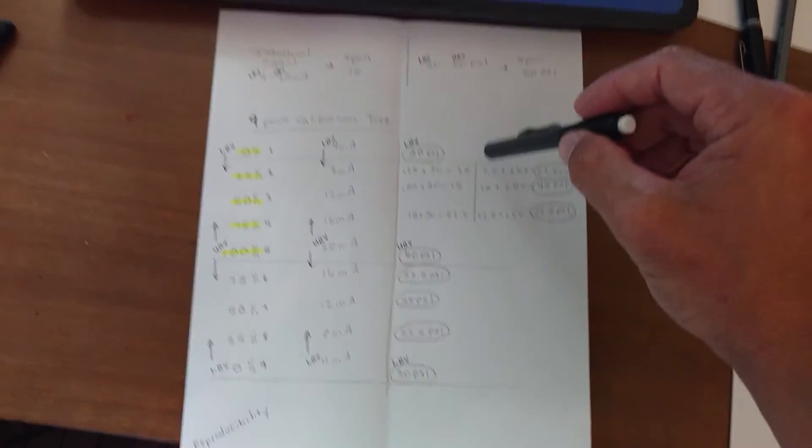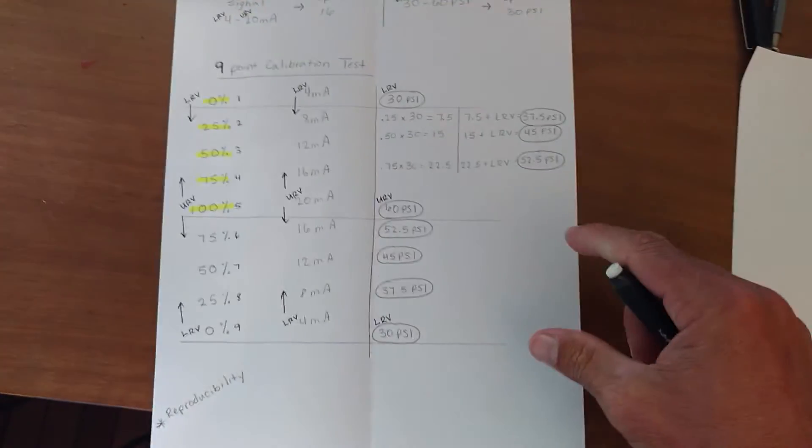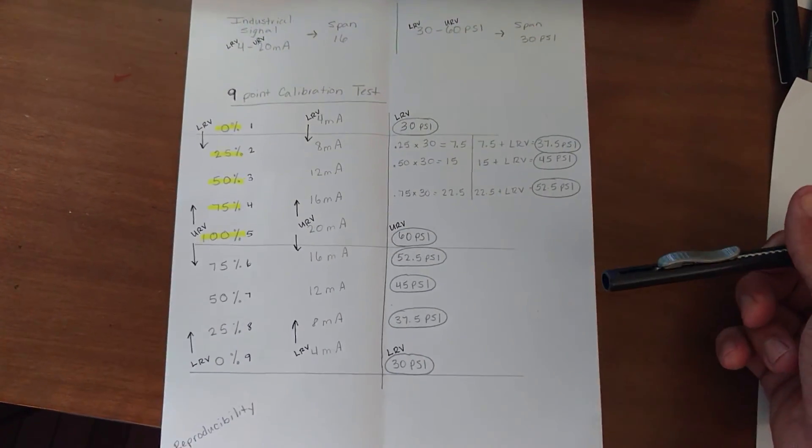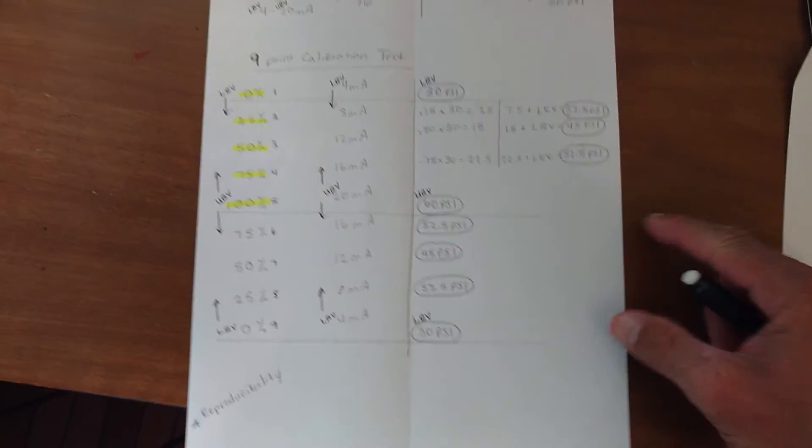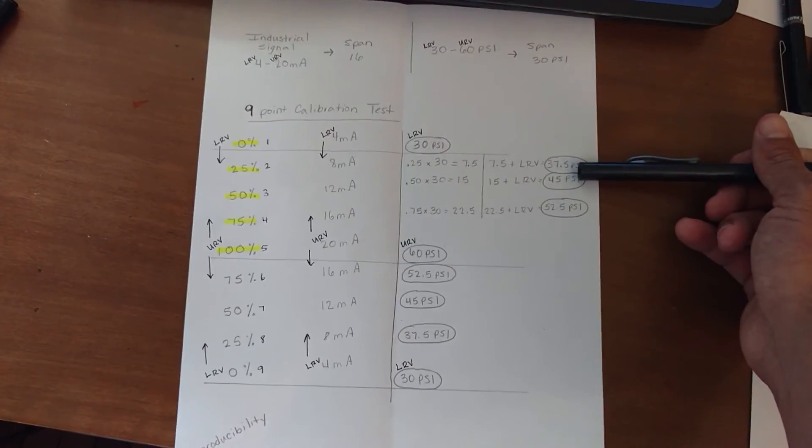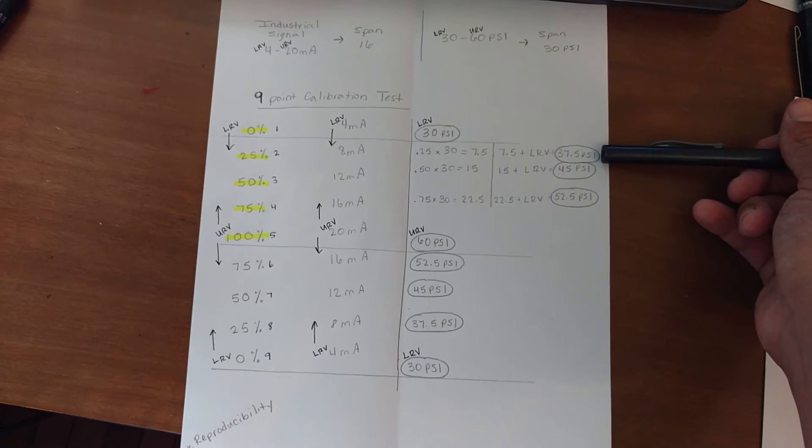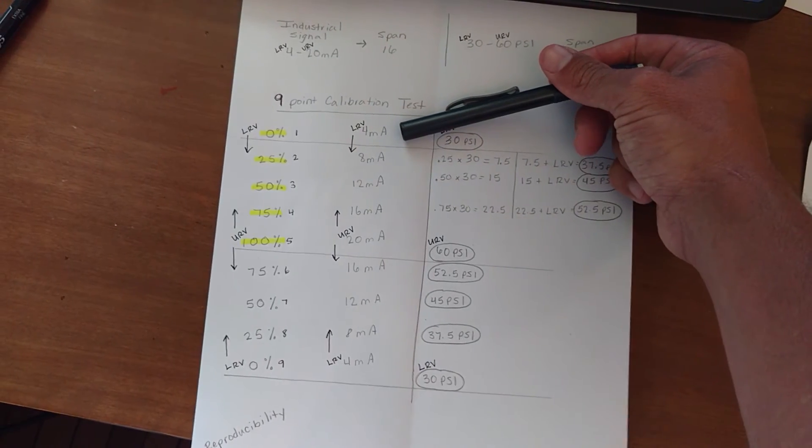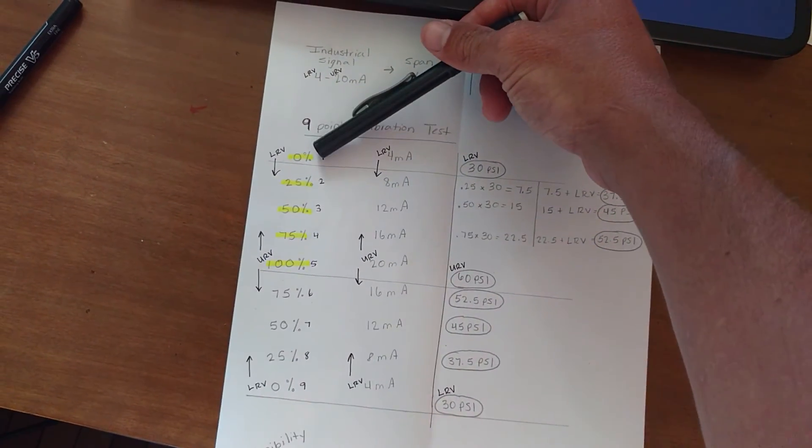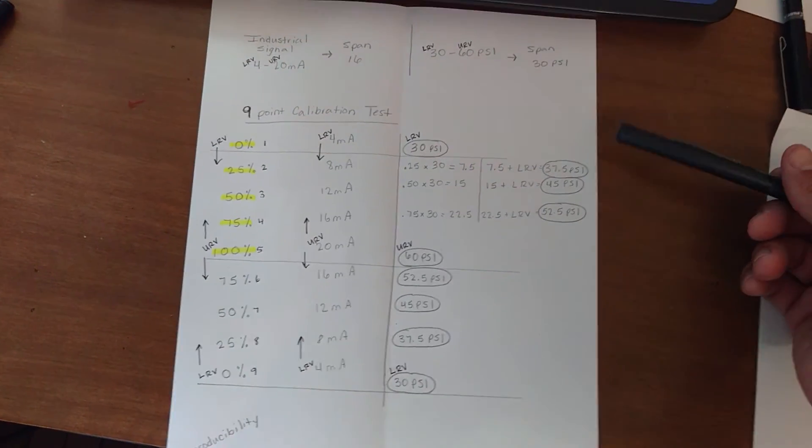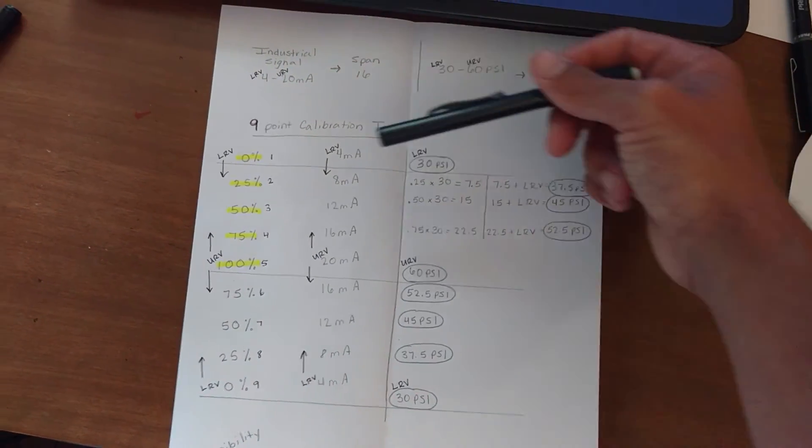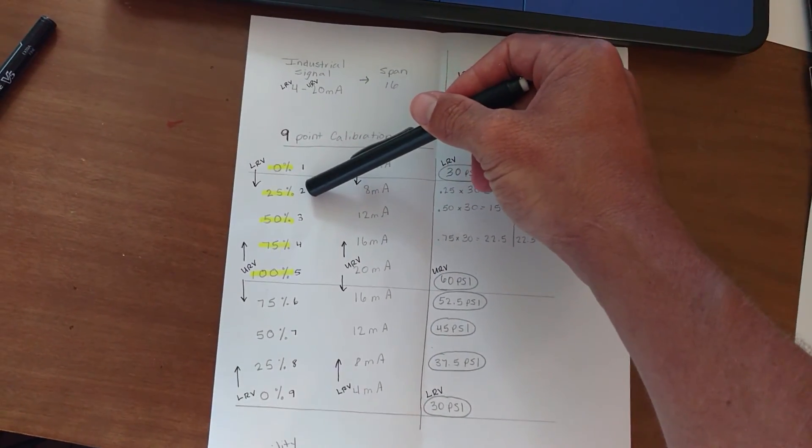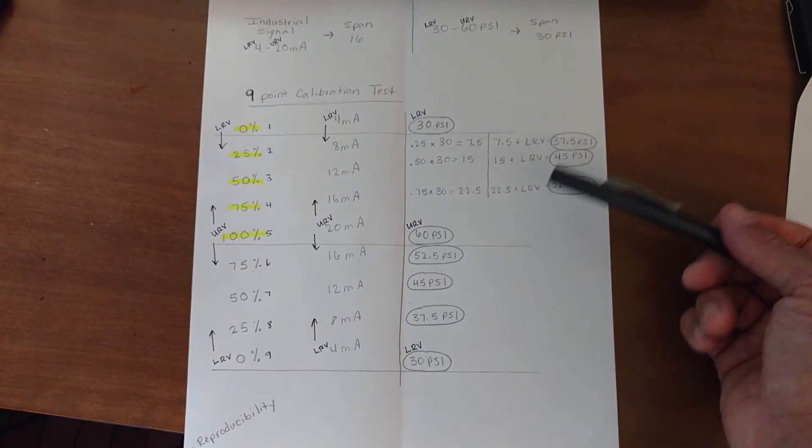So now we have all the nine points of our nine-point calibration test. And we would actually use these numbers to test our pressure transmitter in this case. And what we would want, what we would hope for, is that when we see that we're testing 30 psi, we would hope that our transmitter is sending 4 milliamps, because that would represent 0% of our span. We would hope that at 37.5 psi, our transmitter is sending 8 milliamps, and that that represents 25% of our span. And likewise with all of these.